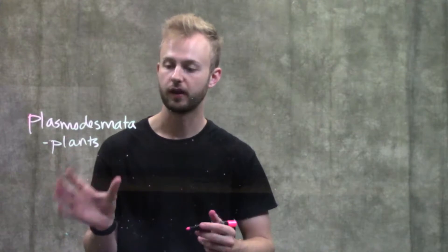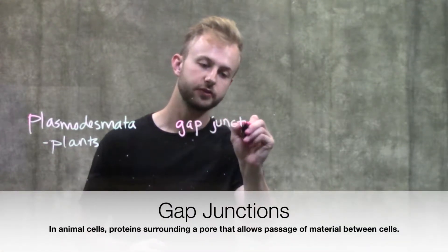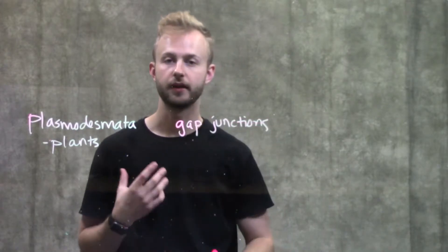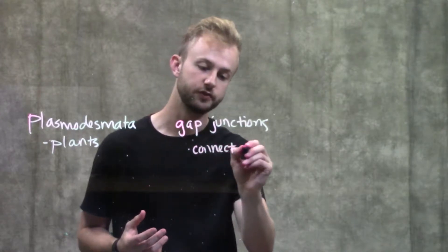Really similar to plasmodesmata are gap junctions. Gap junctions do essentially the same thing but in our cells. They connect the cytoplasm of two cells.